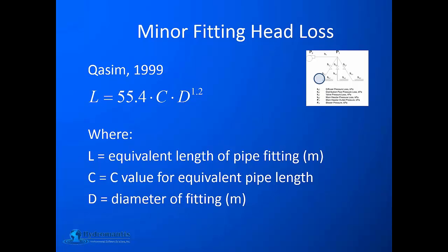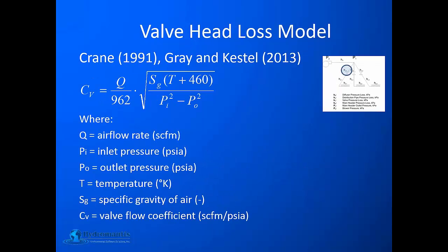To model minor fitting head losses, users can specify the equivalent length of fittings directly into the model, after which the pipe head loss equation is applied. For the valve head loss model, we use the equation proposed by Crane 1999 and also used by Gray and Castle in their 2013 paper. This equation is based on a valve discharge coefficient linked to the air flow rate, specific gravity of the air, air temperature, and the inlet and outlet pressures.